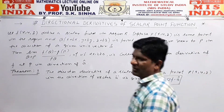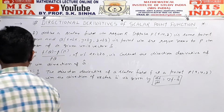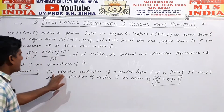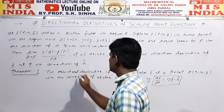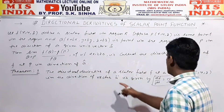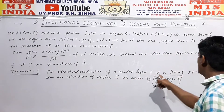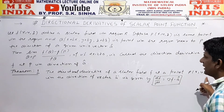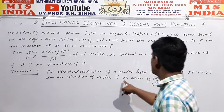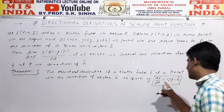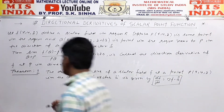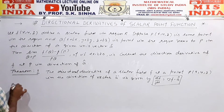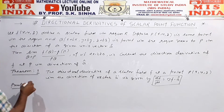This is the formula. The directional derivative of a scalar field f at a point P(x,y,z) in the direction of vector a is given by df/ds = ∇f · â. Now let's do the proof of this theorem.